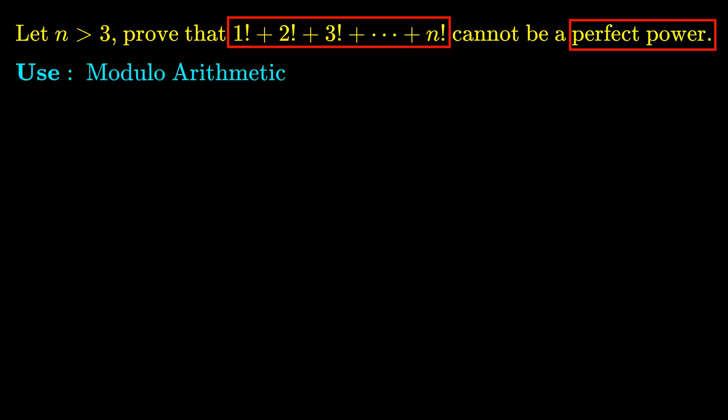Let's frame this proof by contradiction. We assume for contradiction that 1! + 2! + ... + n! = a^b. We will show that this cannot be true.